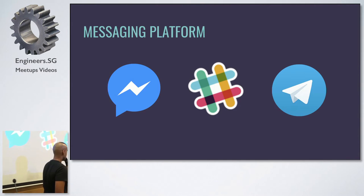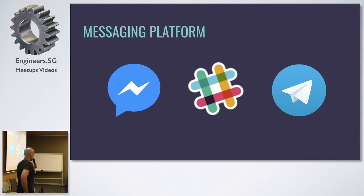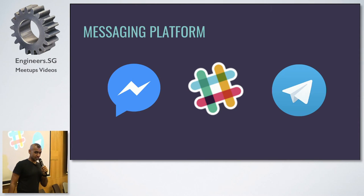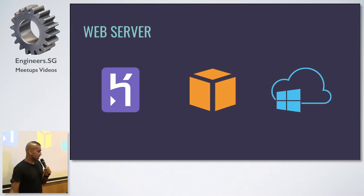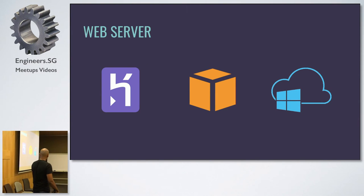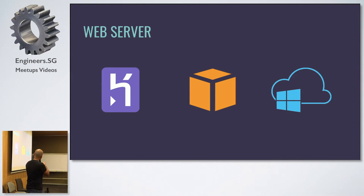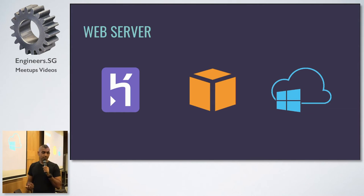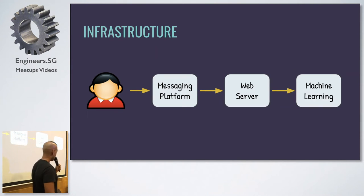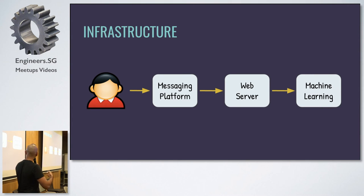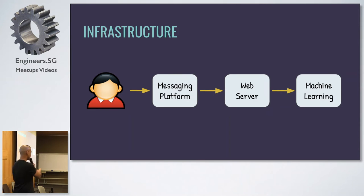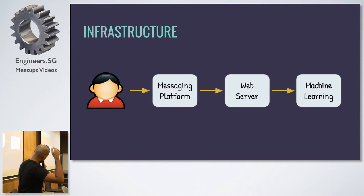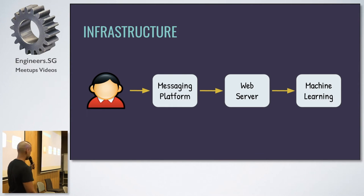The second part you need is a messaging platform. The most common ones that support bots right now are Facebook Messenger, Slack, and Telegram — there are others like Line and Kik too. You just choose one. Finally, you need a web server — every bot in the background is actually just a web server. Examples are Heroku, AWS (Amazon Web Services), and Microsoft Azure. That's all you need: a messaging platform, a web server, and a machine learning library. Whenever anyone talks to your chatbot, the user talks to the messaging platform, it hits the web server, the web server hits machine learning, and a response comes back to the user.